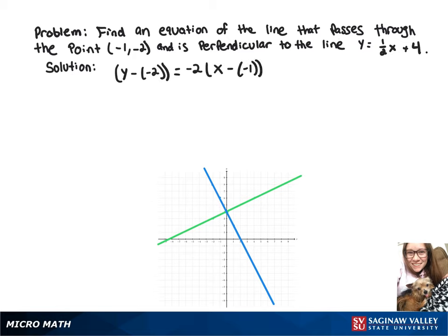The reason our slope here is negative 2 is because we want to take the opposite reciprocal of the slope that our line is perpendicular to. So we're going to flip that 1 half and put the opposite sign in front of it.